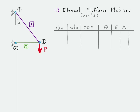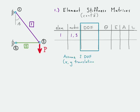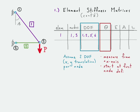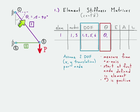We create a table with the information needed for each element. Element one connects nodes one and three, corresponding to degrees of freedom one, two, five, and six — since there are two degrees of freedom per node: x and y at node one are DOFs one and two, and x and y at node three are DOFs five and six. For angle theta, we always measure from the plus x axis starting at the first node defined in the element, with counterclockwise as positive. For element one, starting at node one, theta equals beta minus 90 degrees.